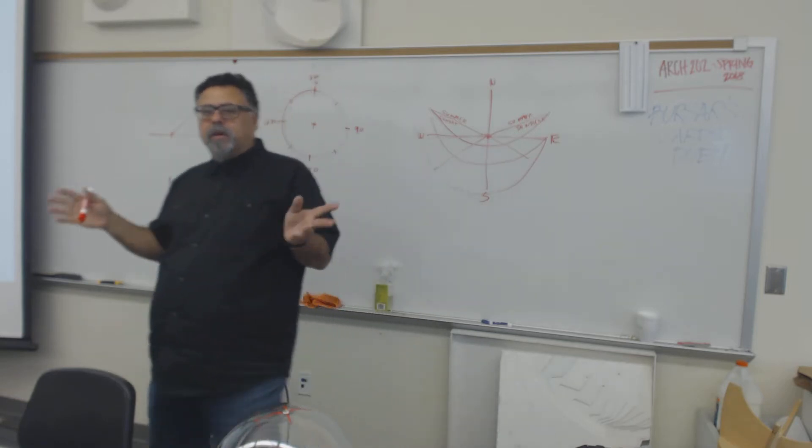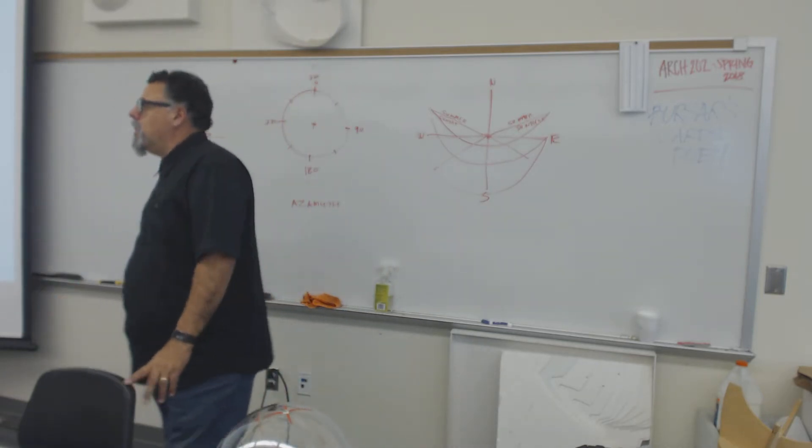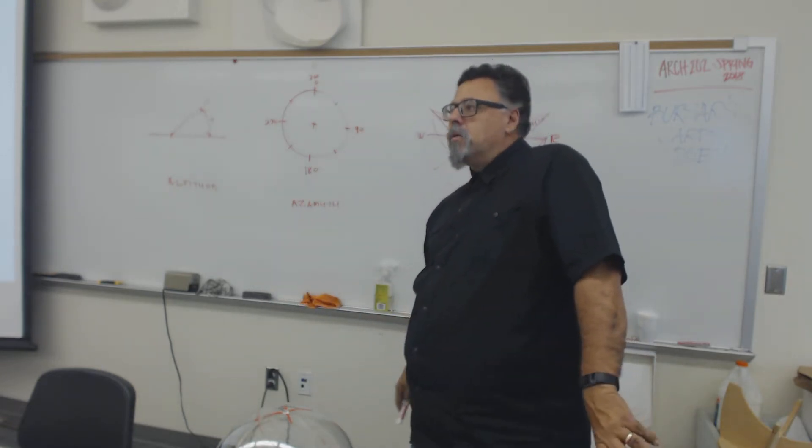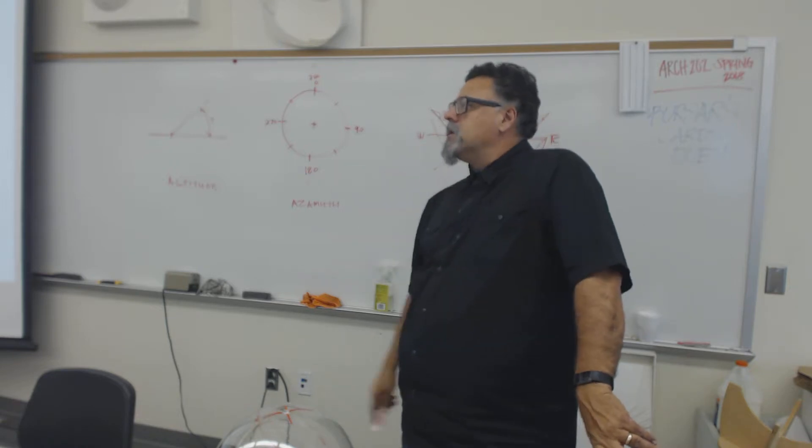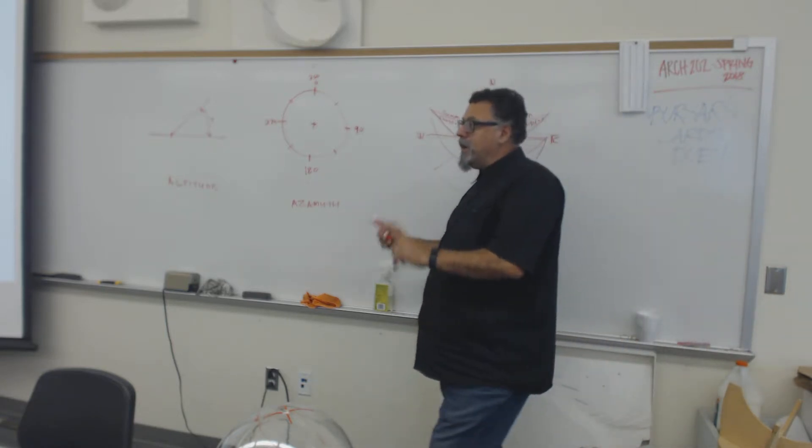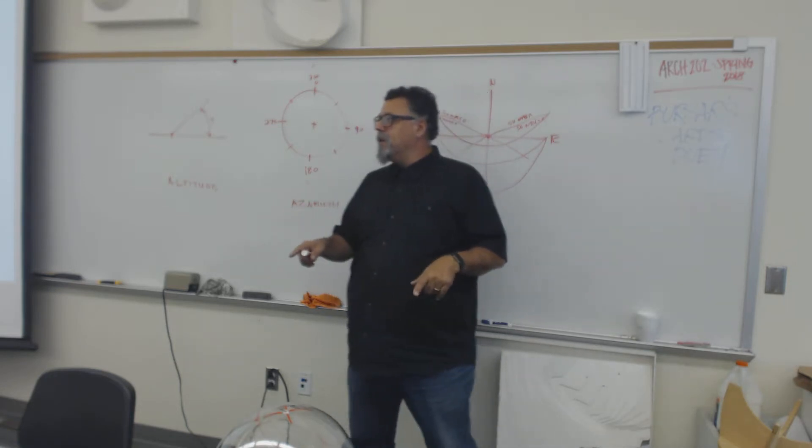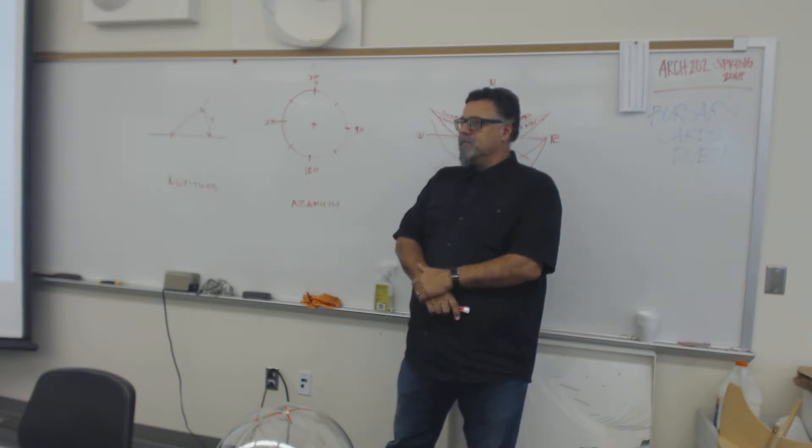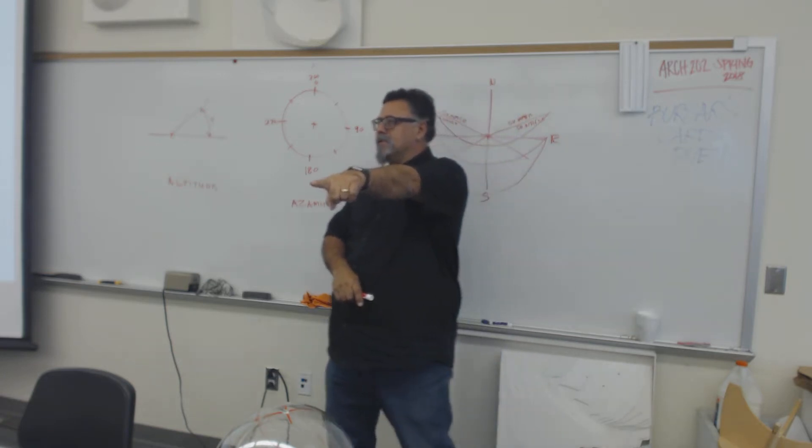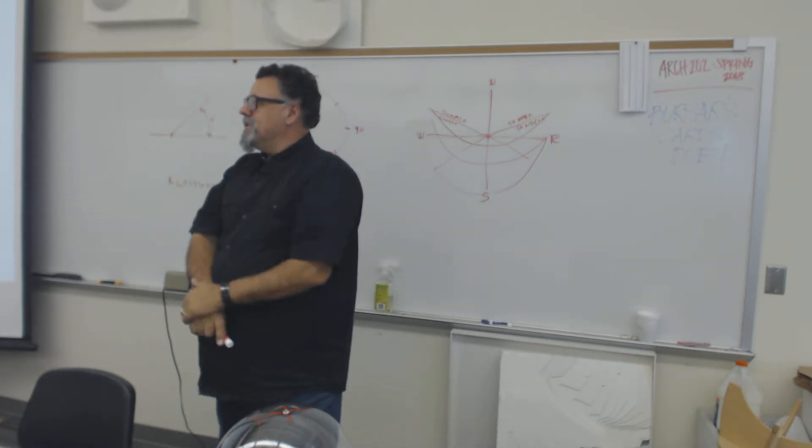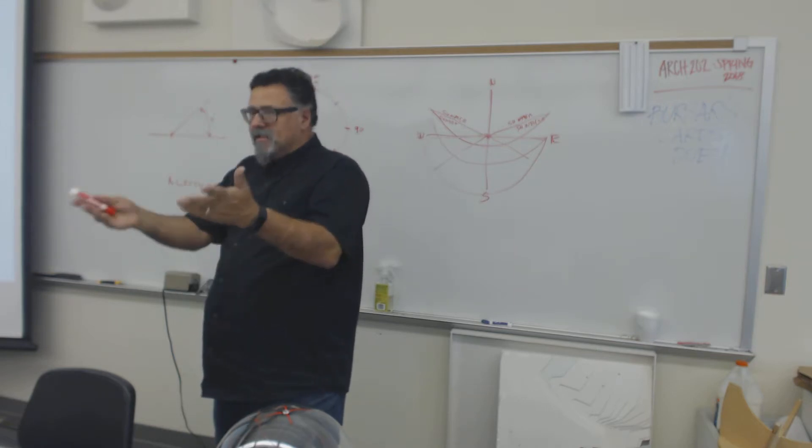So here's another one of those questions that you should be able to just answer. What is the azimuth of the sun at solar noon at the equinox? I got a 180. Anybody else? So two 180s. It's correct.